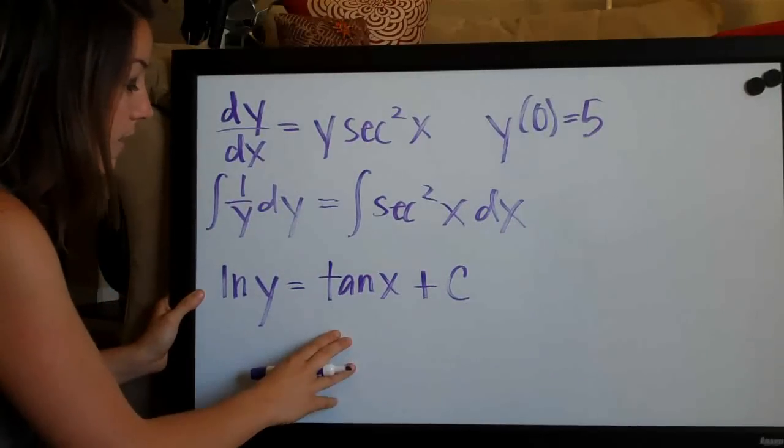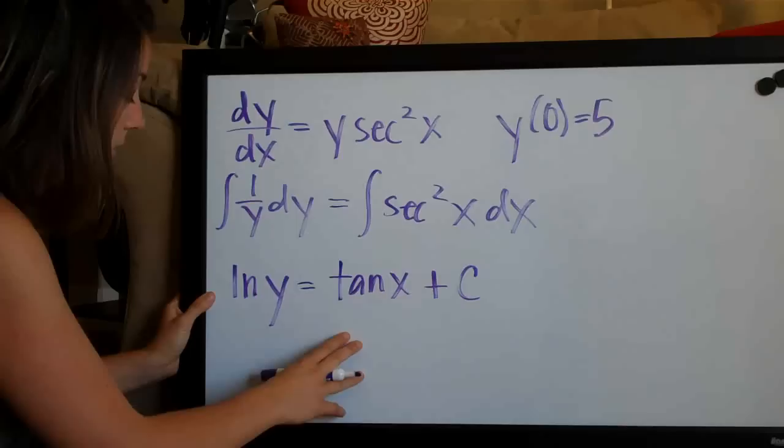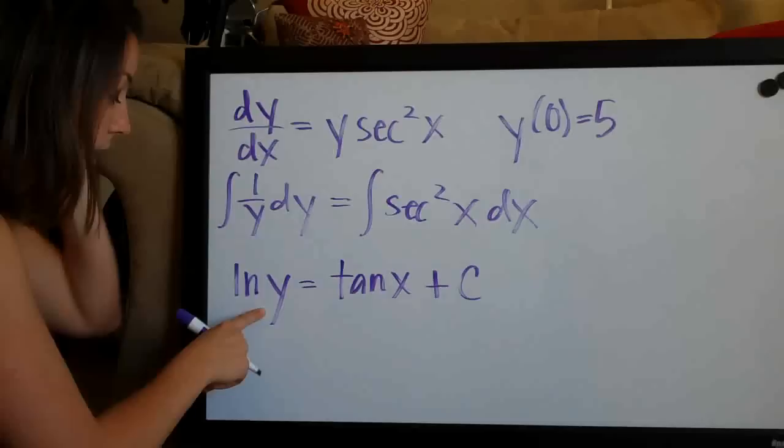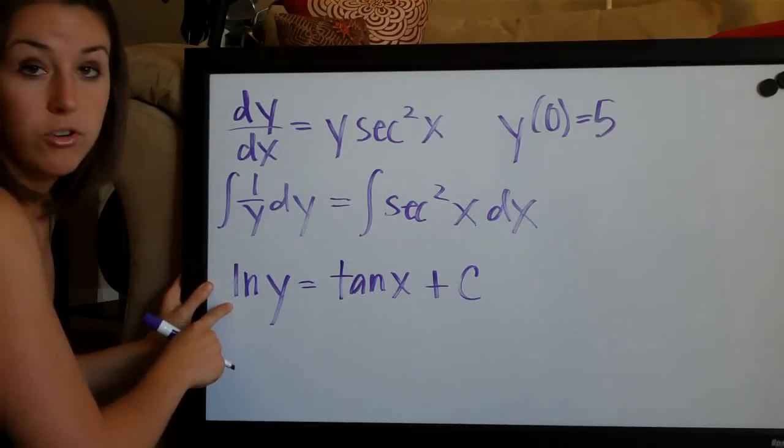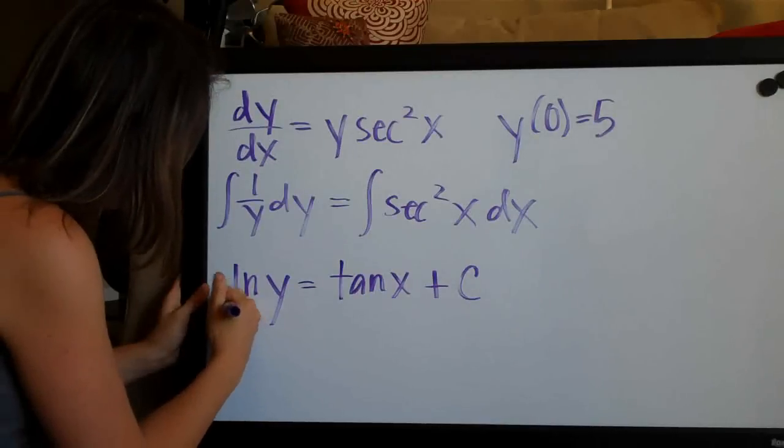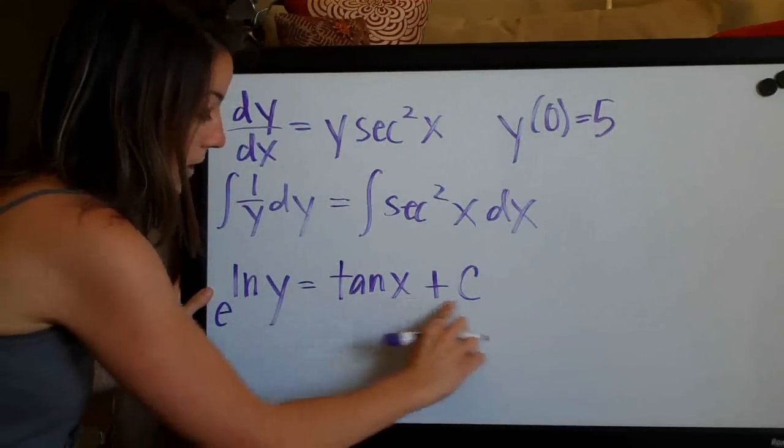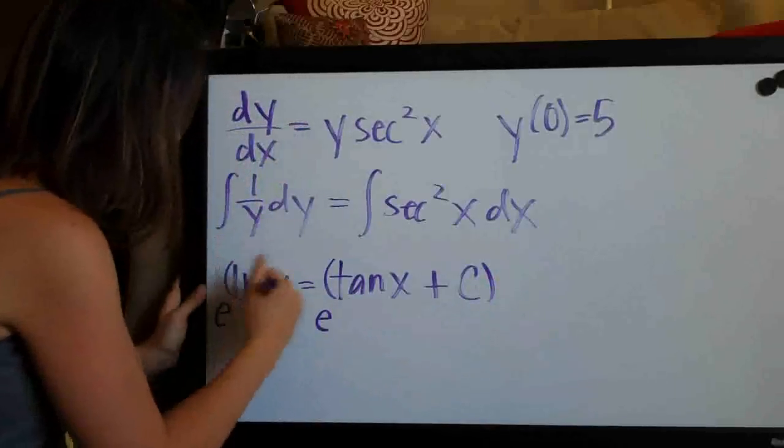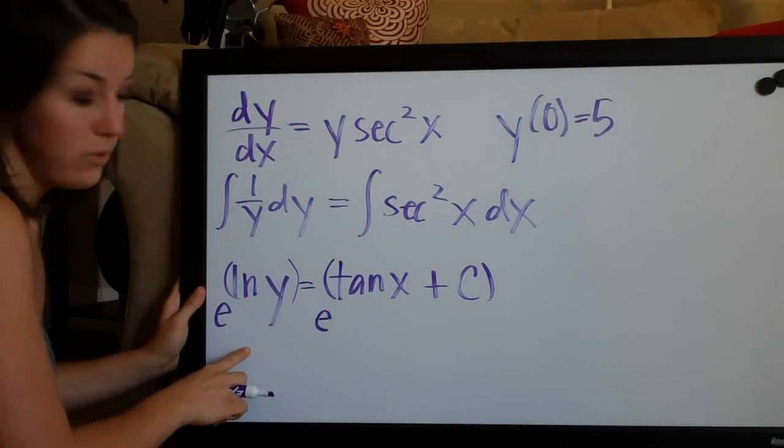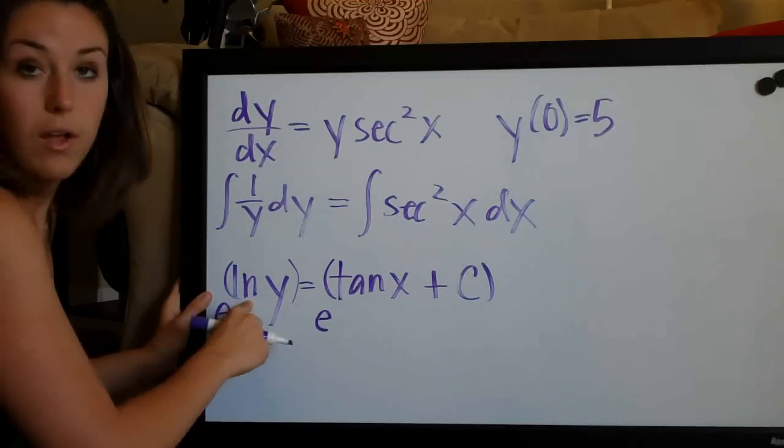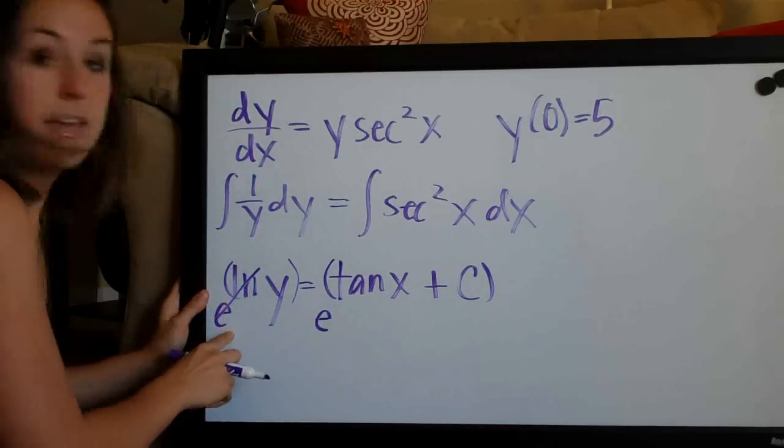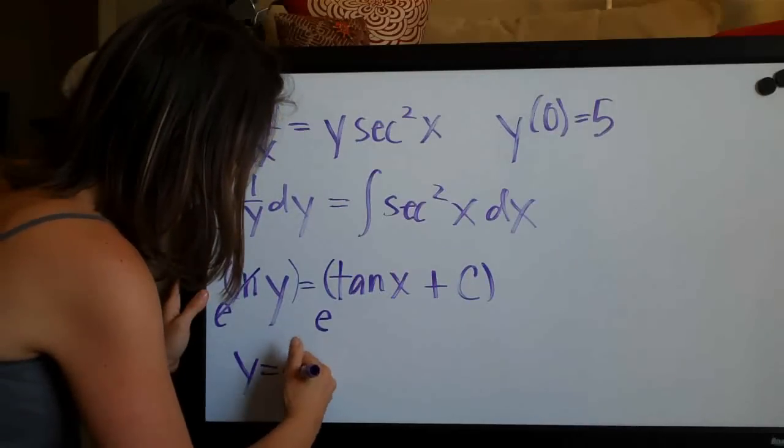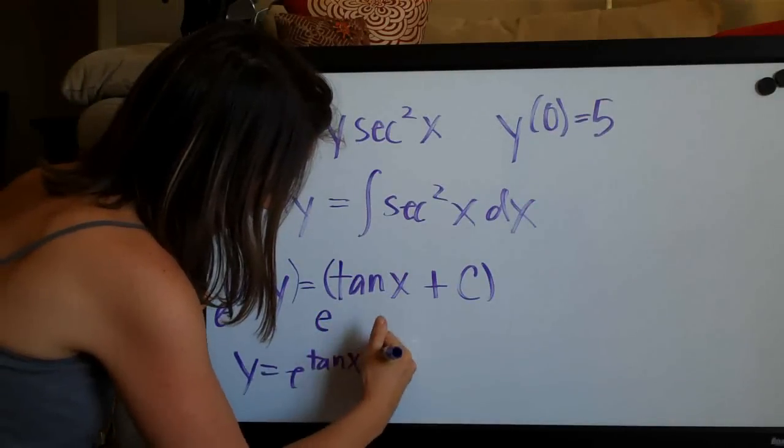So we've gone ahead and taken the integral of both the left and right side and now what we need to do is try to get y on its own on the left side. And the way that we're going to do that, obviously if we're going to get y by itself, we need to get rid of the ln or the natural log. We're going to raise both sides to base e. So ln of y becomes the exponent and tangent of x plus c is going to become the exponent. So when we do that, because e to the natural log of something cancels out the e and the natural log, we end up with only y on the left side. So we have y equal to e to the tan x plus c.